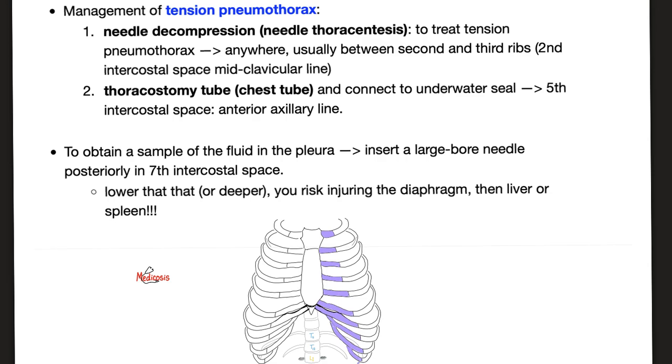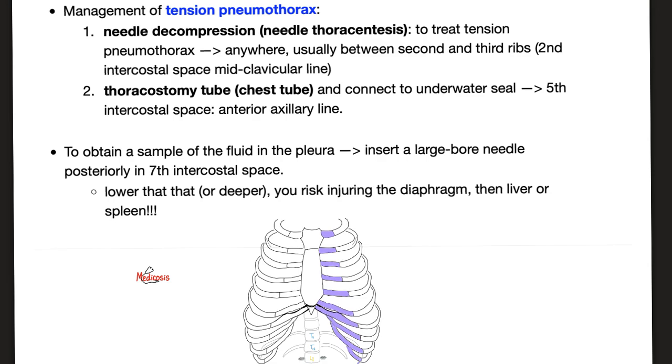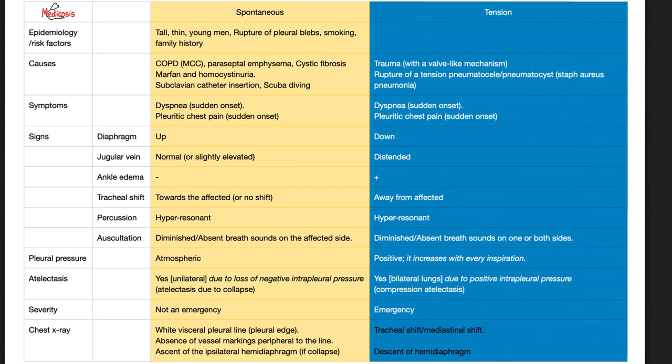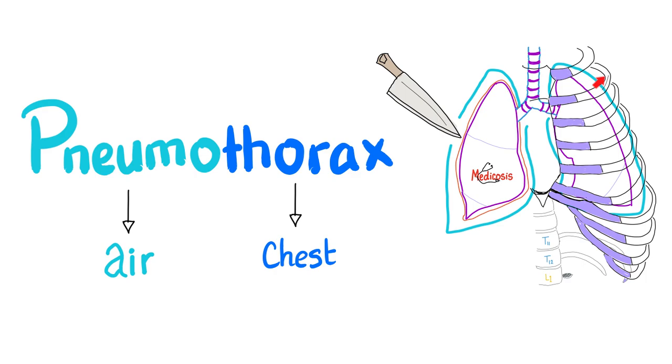How do I treat tension pneumothorax? Needle decompression or thoracostomy tube or chest tube. Where do I put the needle? Anywhere, but usually between the second and the third rib. This is the second intercostal space, mid-clavicular line. Should I go above the rib or below the rib? Above the rib, away from the neurovascular bundle. The difference between spontaneous and tension pneumothorax was discussed before in my video titled Pneumothorax in my pulmonology playlist.